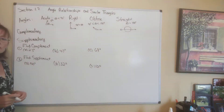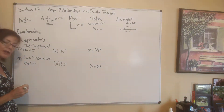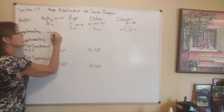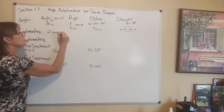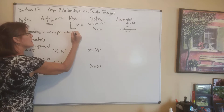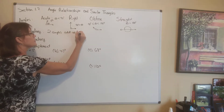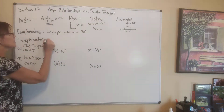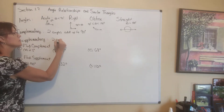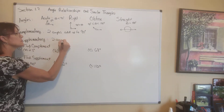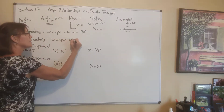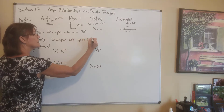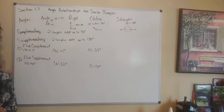Complementary angles are two angles that add up to 90 degrees. Supplementary angles are two angles that add up to 180 degrees.